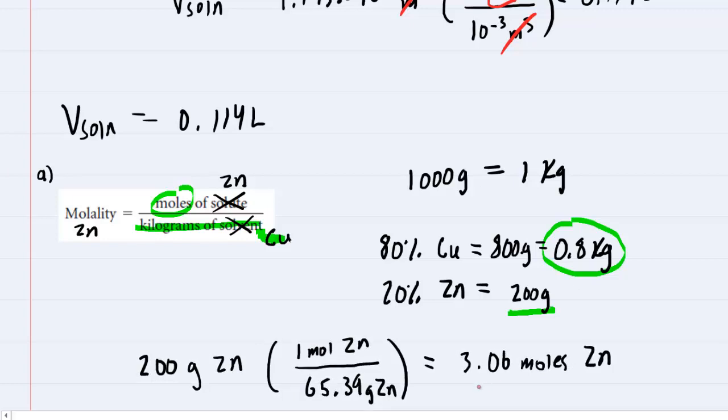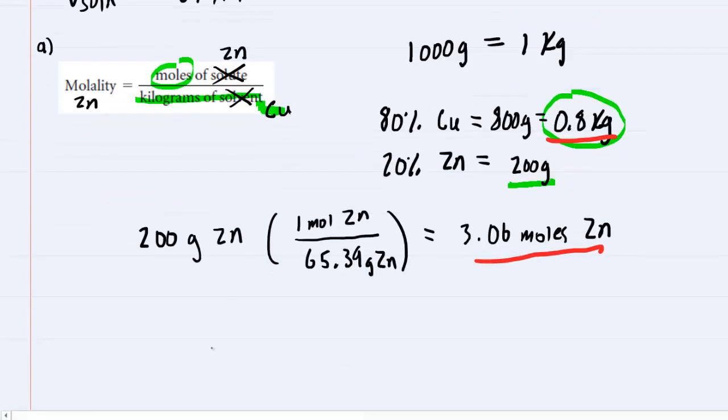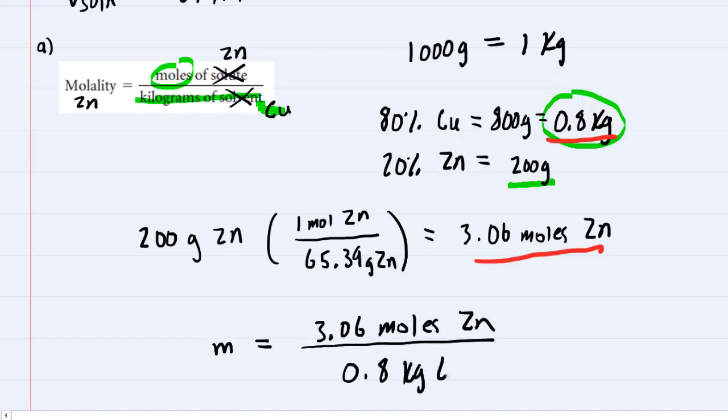We'll take the moles of zinc and the kilograms of copper solvent and determine the molality. Molality, symbolized by little m, equals moles of zinc solute divided by kilograms of copper solvent. We divide this out and get about 3.82 m of zinc. This is the correct answer to part A.